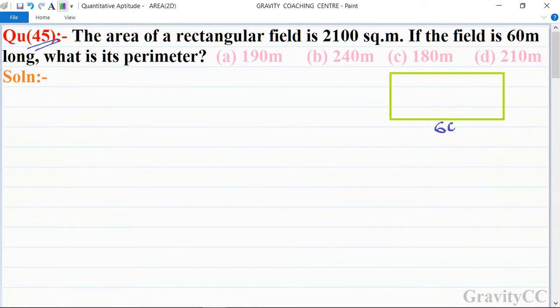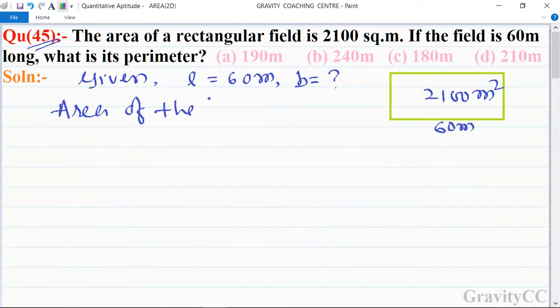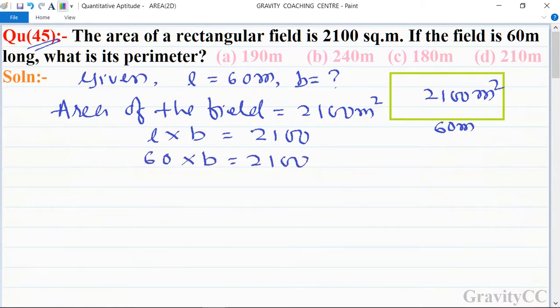And its area is 2100 square meters. Area of the field is equal to 2100 square meters. L times B equals 2100, so 60 times B equals 2100. So B is...